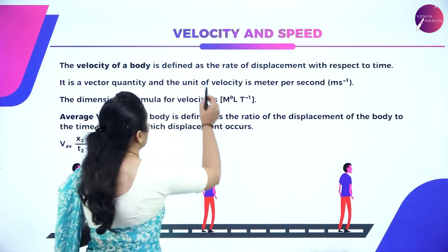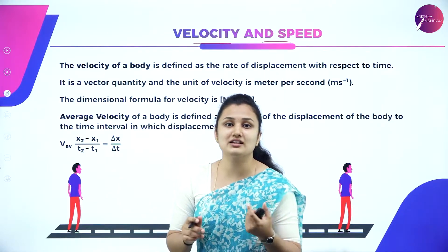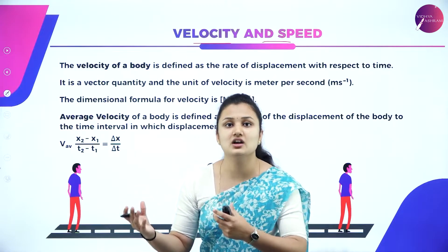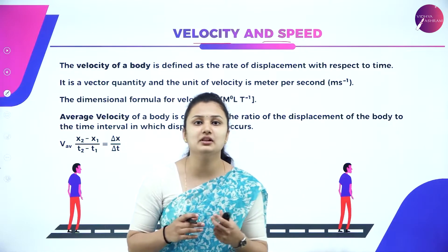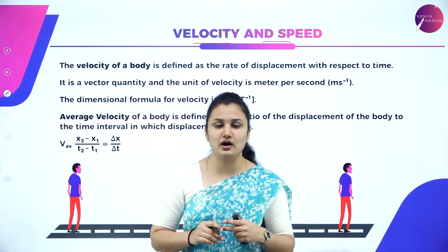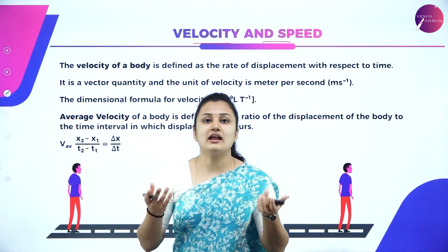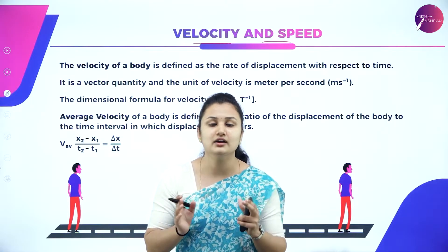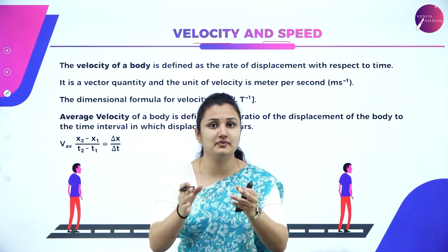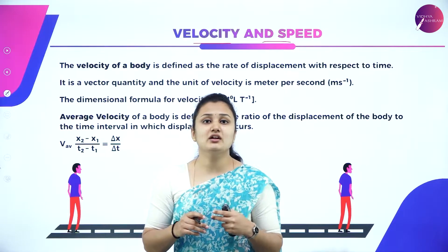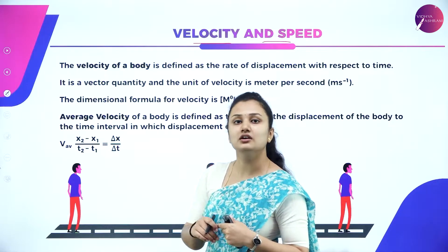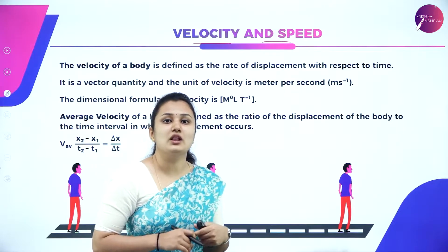Velocity and speed are two terms that help us understand how fast or slow an object is moving. For example, with two cars on parallel roads, you can easily identify which is moving faster. But when cars move in opposite directions, you cannot determine speed easily — velocity is helpful here to determine the fastness of the car.